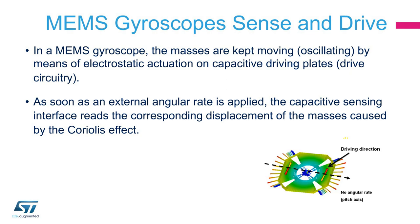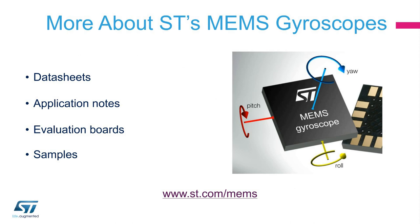For the Coriolis effect to work, the driving mass must be kept under continuous movement. This is achieved with an oscillation regulated and guaranteed by a dedicated portion of the ST ASIC circuitry. As soon as an external angular rate is applied to the sensor, two separate and flexible wings cut inside the mass move up or down depending on the direction of the angular rate applied. Note that as one wing moves up, the other moves down. The distance traveled by the wings is measured to provide the angular rate.